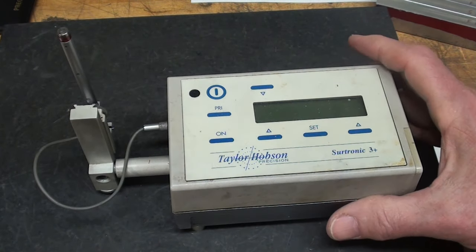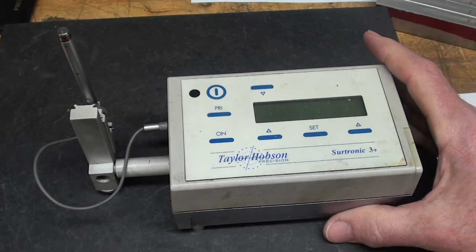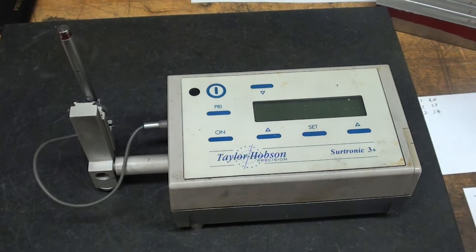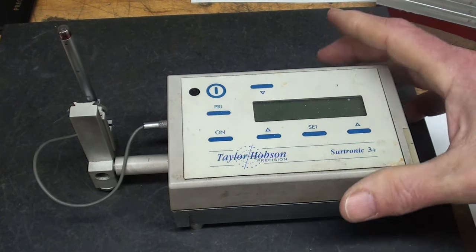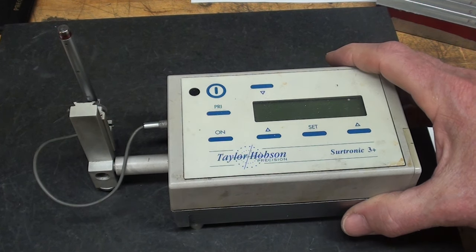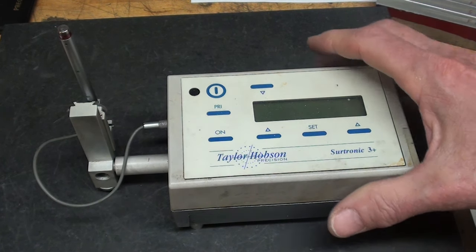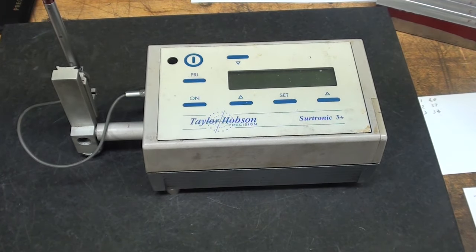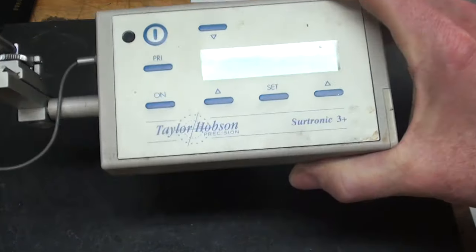Now we're able to quantify it more accurately using one of these surface profilometers. This is a portable one; they have larger ones that are used in laboratories. This one can even be taken out onto the work site or laid on work out in the shop on the milling machine, moved around, and it is battery powered by a nine volt.